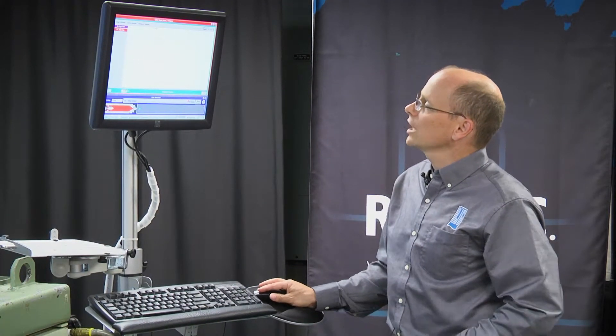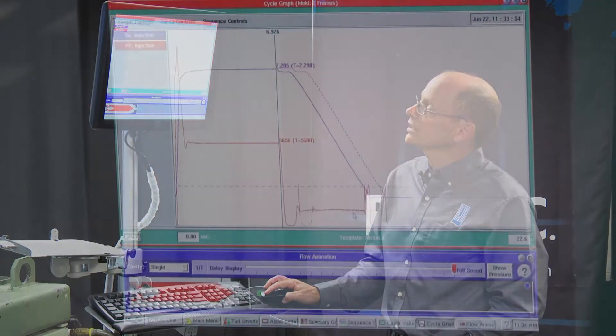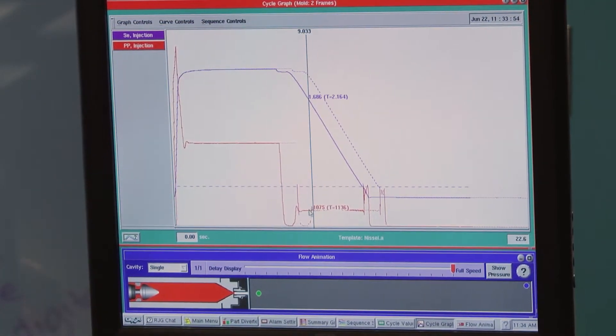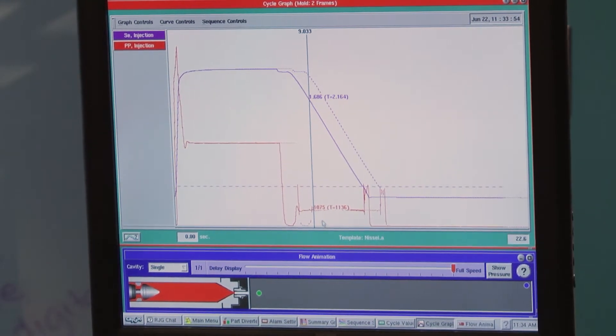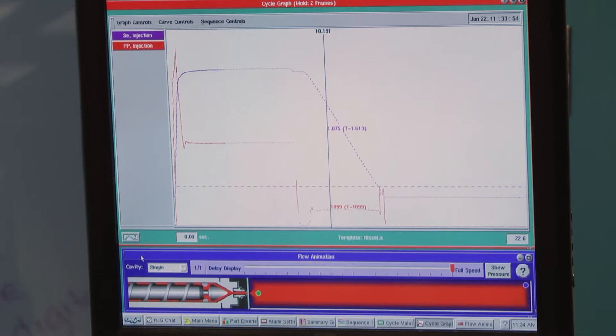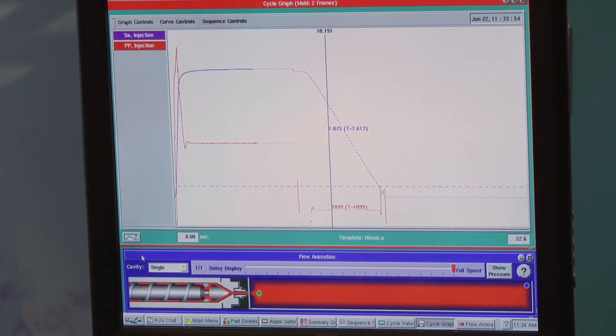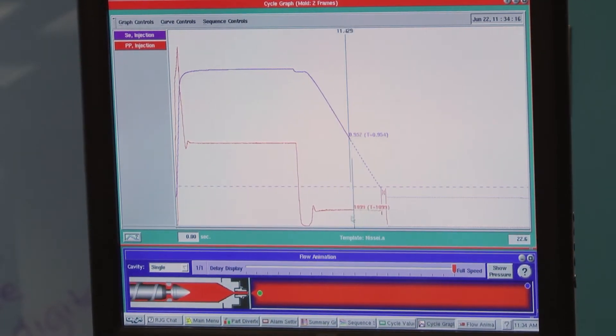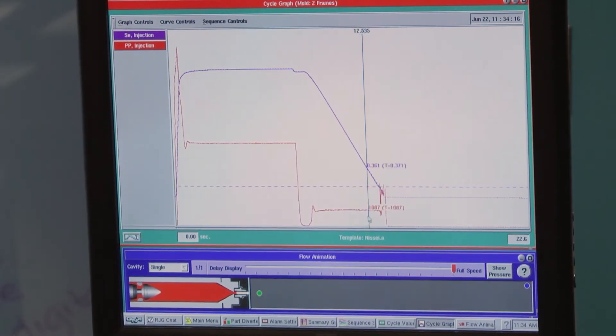In the meantime, we can look at screw recovery. What's happening during screw recovery here is we're seeing this pressure, which is the back pressure. Our back pressure is set to 1000 PSI, which may sound high if you're thinking about hydraulic pressure, but this is actually the plastic pressure. So we can see that plastic pressure.